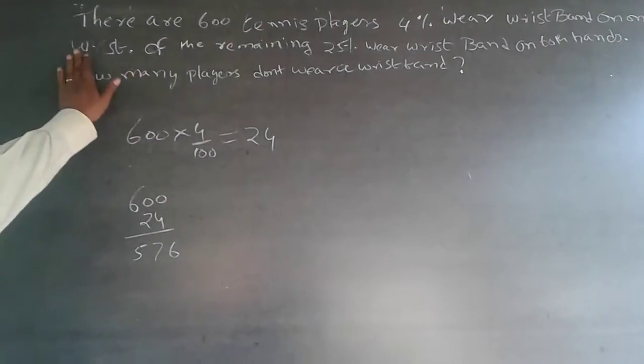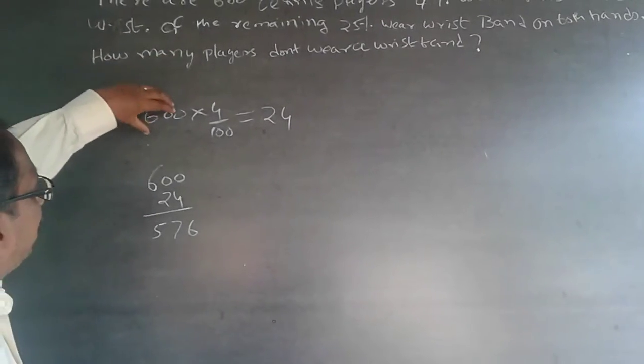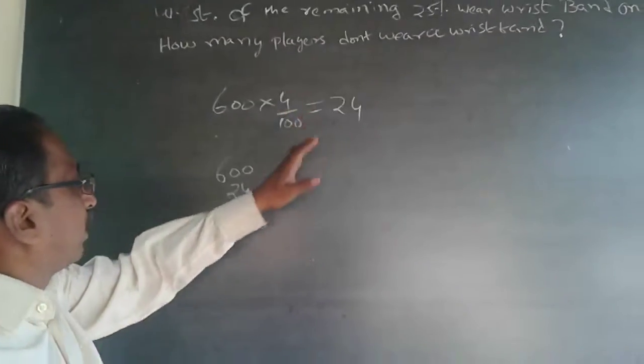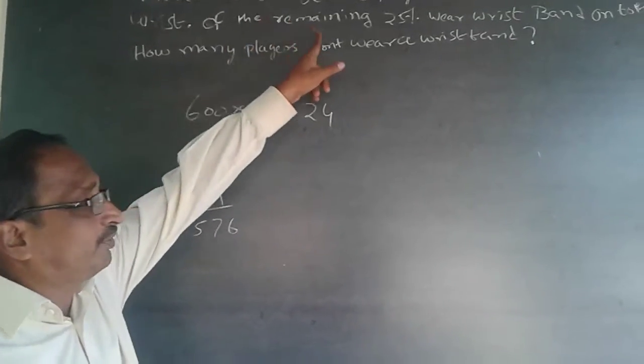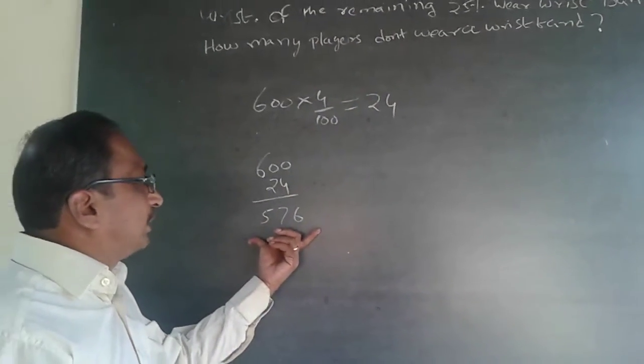Now, of the remaining. See, many students what they do is on this 600 again they will do 25%. Don't do that. The question is talking about of the remaining. So the remaining is 576.